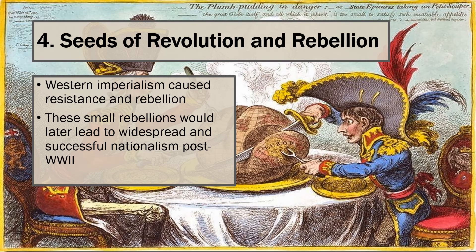In the late 1700s, the former North American colonies of Great Britain revolted against colonial rule and declared themselves an independent nation — the United States of America. Shortly after, France threw off the yoke of monarchy and established a republic. In the early 1800s, former Spanish and Portuguese colonies in South America also became independent states. As Western imperialism took hold in other parts of the world, the seeds of resistance and rebellion that would, in time, lead to new nation states took root.